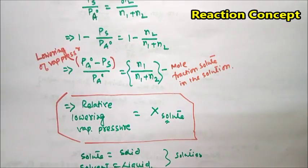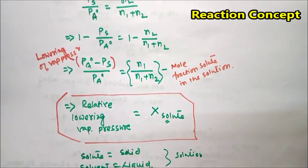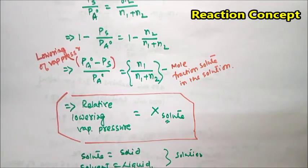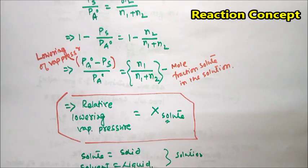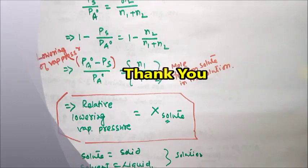This is a very important result: for a solution where the solute is a non-volatile solid and the solvent is a volatile liquid, the relative lowering of vapor pressure equals the mole fraction of the solute in the solution. That is today's class. If you have any doubts you can ask in the comment section. In the next class I will discuss some problems or give an assignment. If you are new to this channel, please subscribe and press the bell icon for notifications. Thank you.